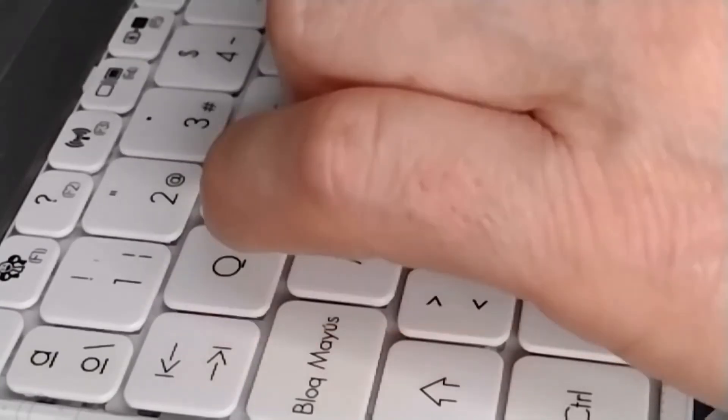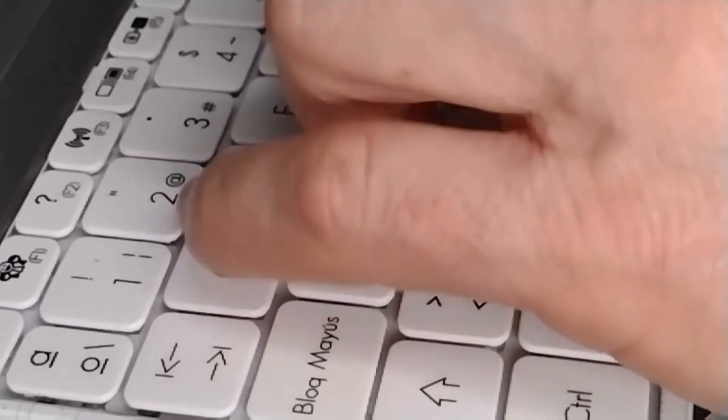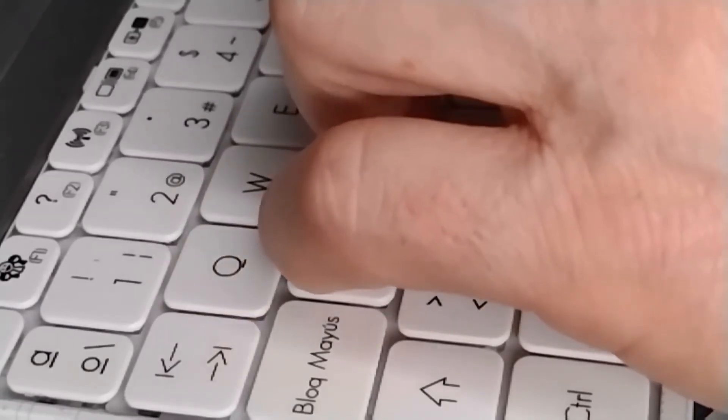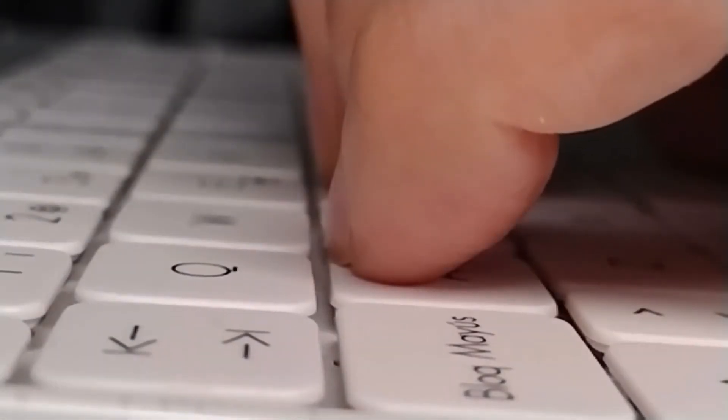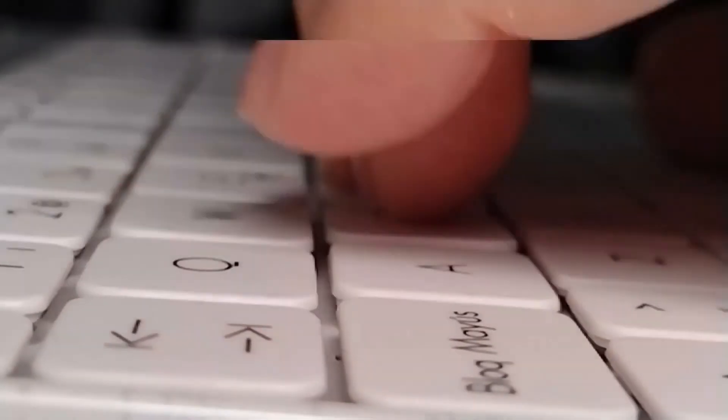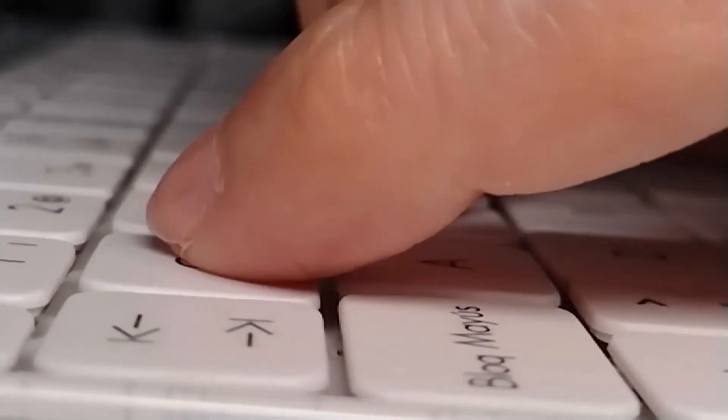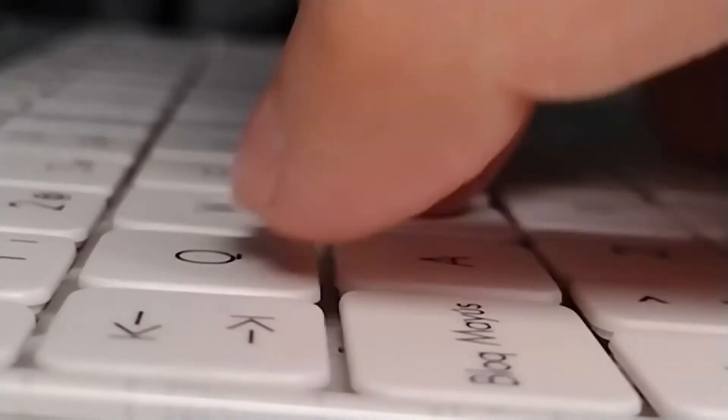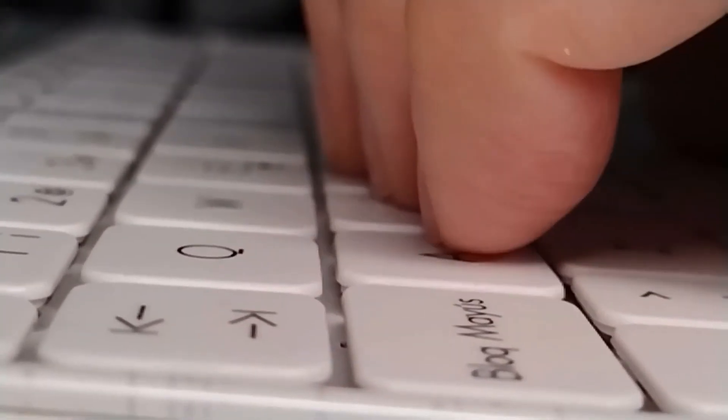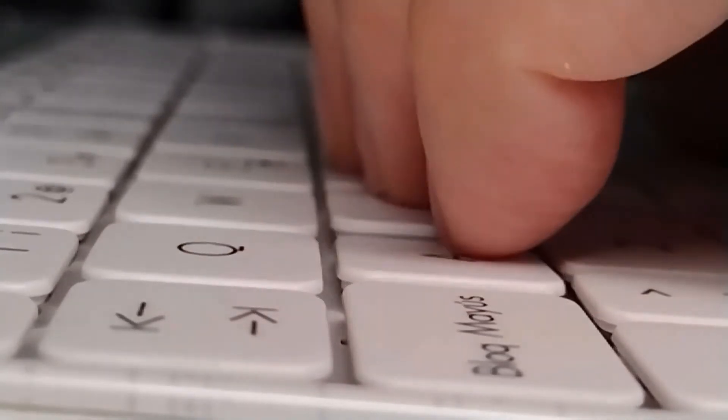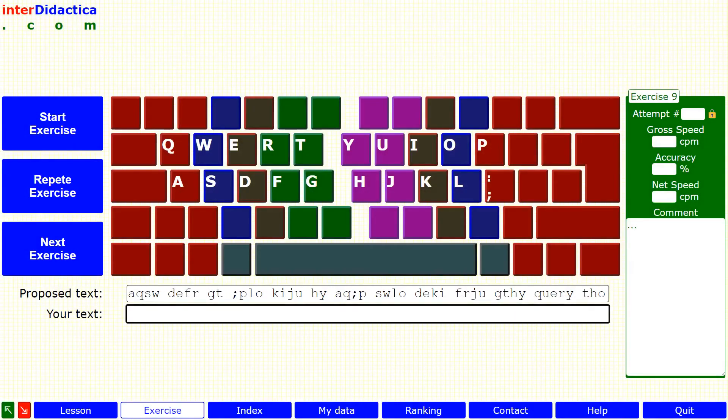In order to type the letter Q, the little finger moves from its home key, which is the letter A, to the Q key and quickly returns to its position. It's a good idea to practice this movement before doing the exercise.